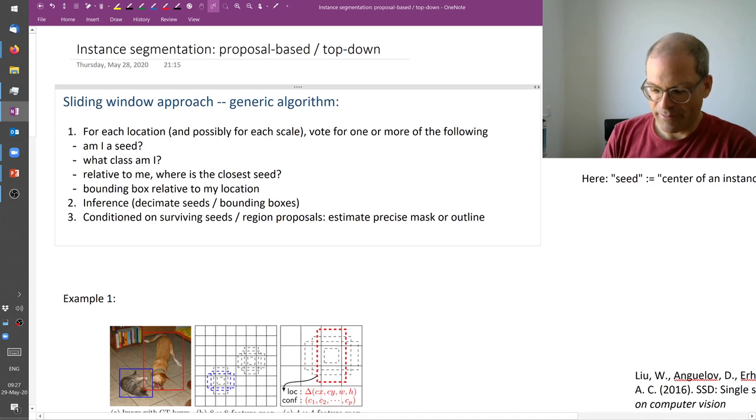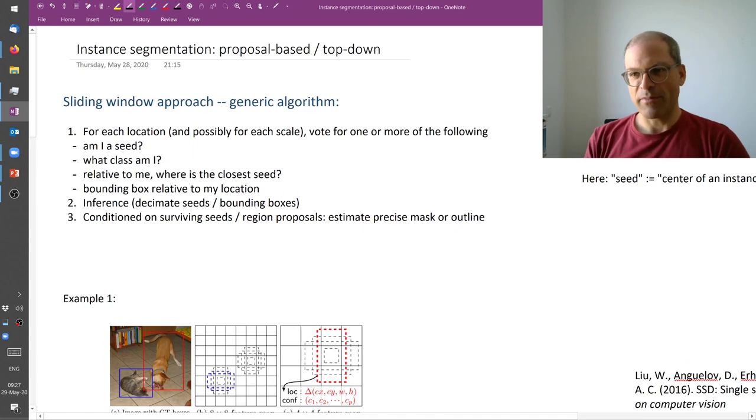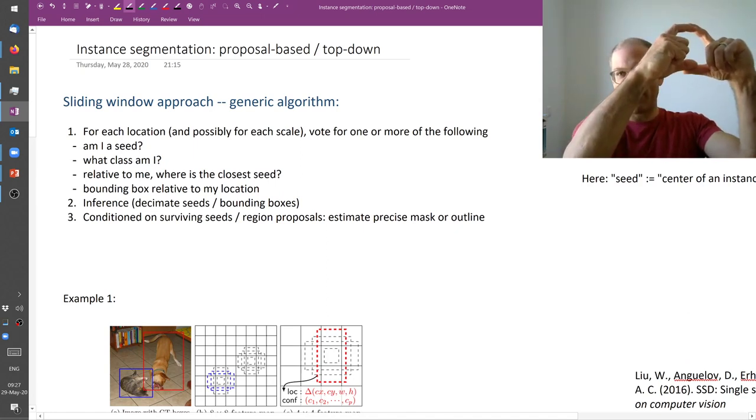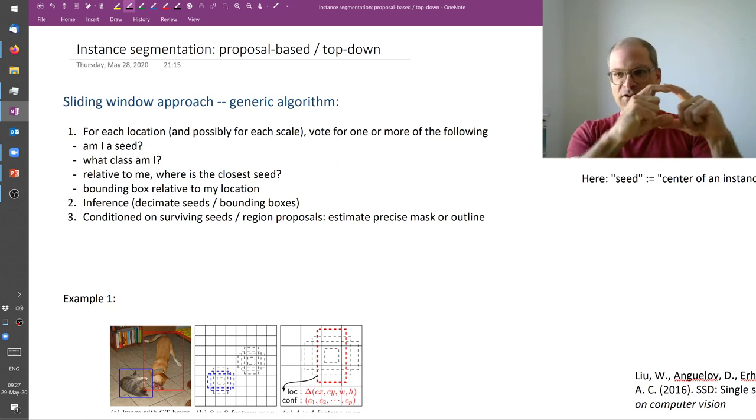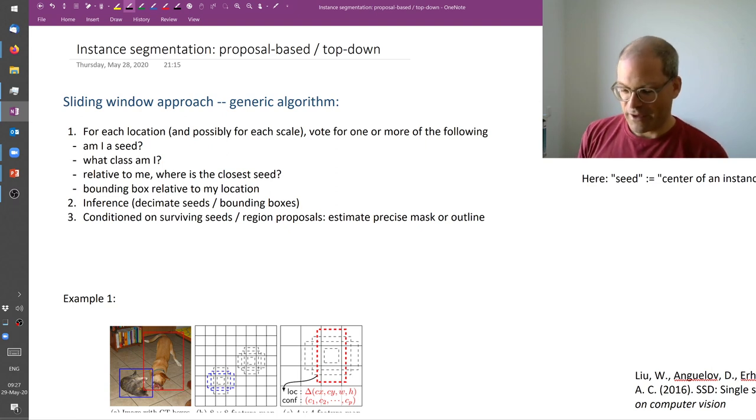We operate in a sliding window fashion meaning we take a patch of interest and then we process one patch at a time across the entire image. On a GPU you would like to do this in parallel and such sliding window approaches are very efficient because in each patch you do the same thing and this maps well to the kind of hardware that we have nowadays.